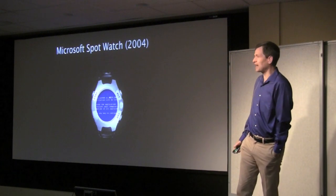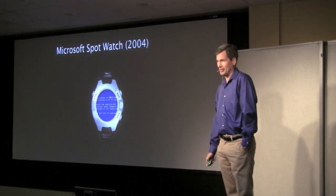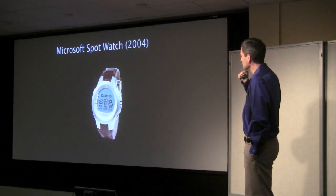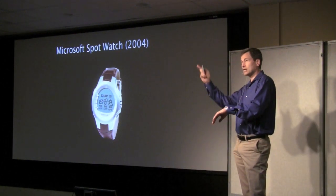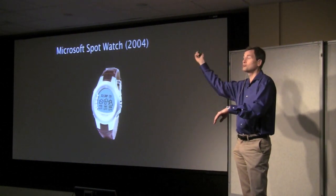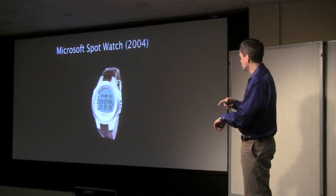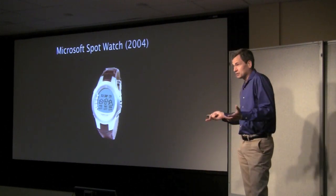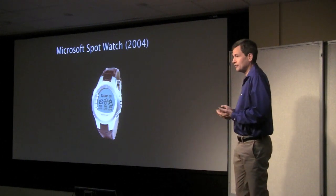Remember this, the Microsoft Spot Watch? That's a joke. It didn't really display the blue screen of death. It looked like this. And it was actually very cool. It was the first smartwatch. It connected to the internet via the FM radio band, which is very clever. So it showed you your text messages and your email and the weather and sports and so on.